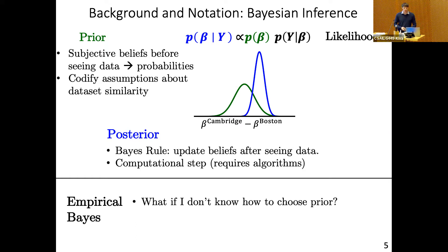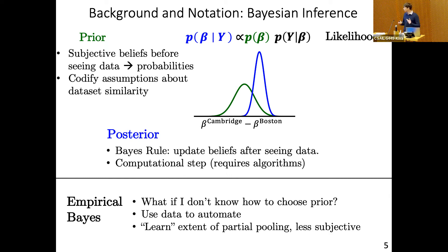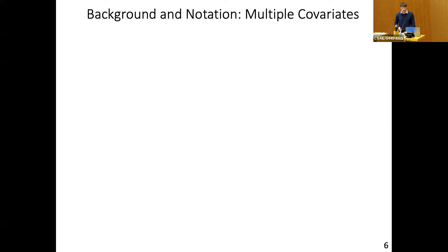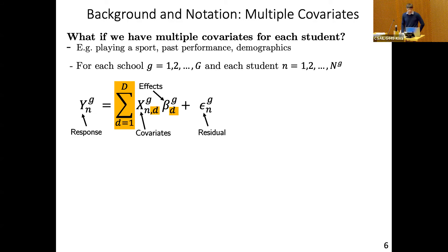There's one final piece of complexity in our notation: what do we do if we know more about each student? So if we now have multiple covariates — in addition to knowing if they were in the free lunch program, we also know if they played a sport, what their past performance was, maybe demographic information as well. We add this into our notation by adding a subscript d to index all these different characteristics, both into the covariates and into the effects, and summing over these potential contributions of these different factors into the response.